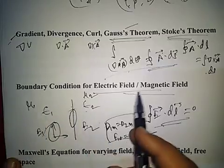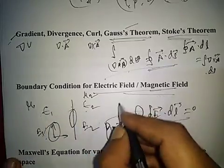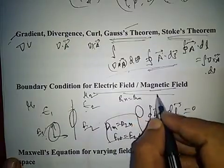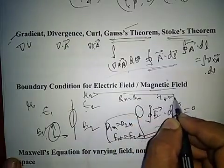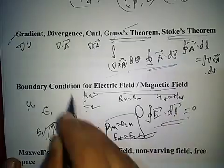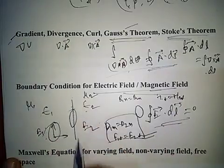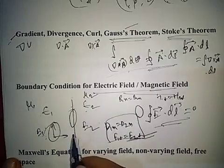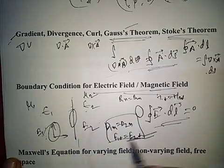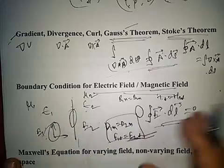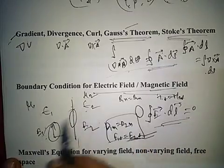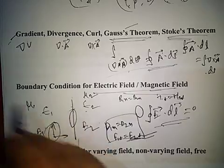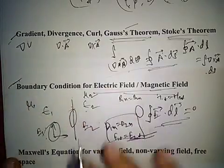Similarly for magnetic fields, the boundary conditions are B1n equals B2n and H1t equals H2t when there is no current at the boundary. When charge or current is present at the boundary, the formulas differ. Boundary conditions are a very important topic from which questions have been asked many times.